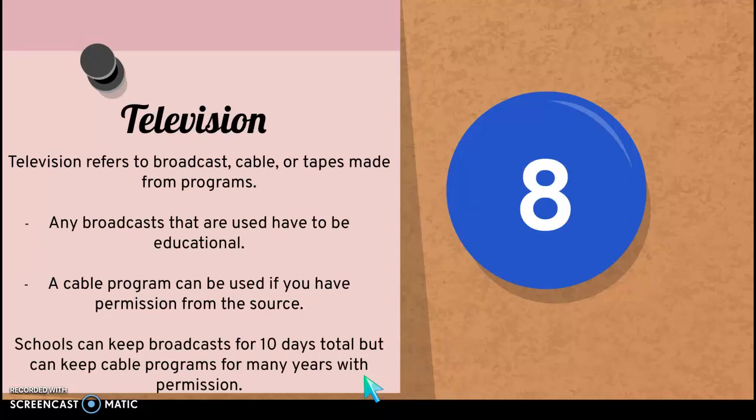Television is something you need to know about, but you might not really be able to use it for a project. Television refers to anything that's broadcast — maybe a sports game on ESPN, cable programs if you're watching something with Dish Network, or even a tape you make from a program. If you use a broadcast you have to make sure you're using it for educational purposes in your project. A cable program could be used if you have permission from the original source. Schools are allowed to keep broadcast recordings for 10 days and can keep cable programs for many years if they have permission from the source to do so.